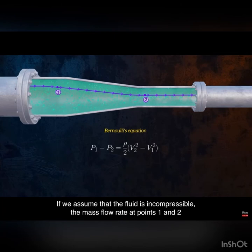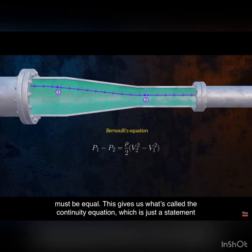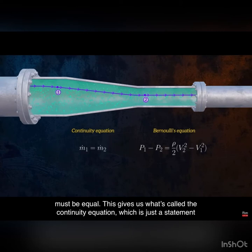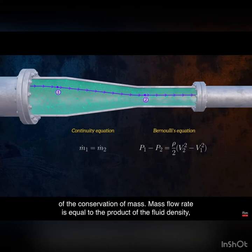If we assume that the fluid is incompressible, the mass flow rate at points 1 and 2 must be equal. This gives us what's called the continuity equation, which is just a statement of the conservation of mass.